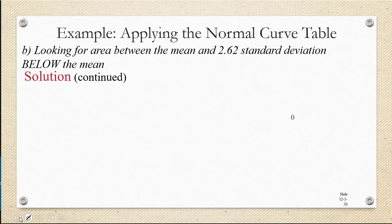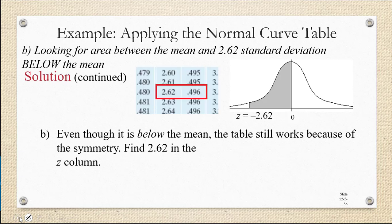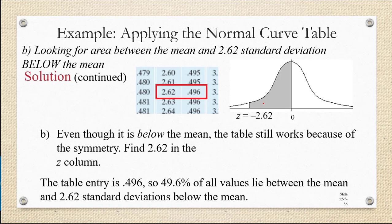Now let's do Part B. Part B, looking for the area between the mean and 2.62 standard deviations below the mean. Remember, the diagram looked like this. But because of the symmetry of the standard normal curve, we can look up positive 2.62 on the table. Looking at 2.62 in the z column, we look to the right to see that it corresponds to an area of 0.496. The area that we're looking for is 0.496, which also means that 49.6% of all the data values lie between the mean and 2.62 standard deviations below the mean.